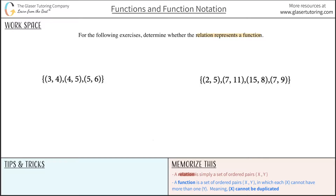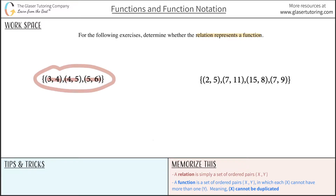A relation is simply a set, meaning a certain number of ordered pairs. Looking at the first example, we have three ordered pairs — one, two, three. So at a minimum, this is a relation.